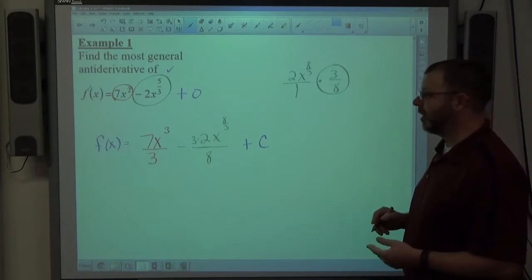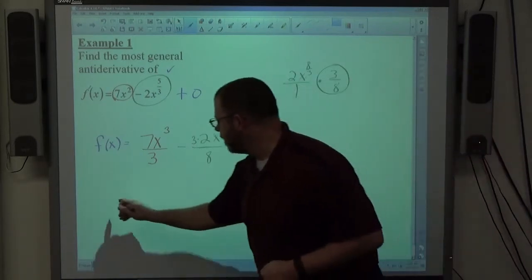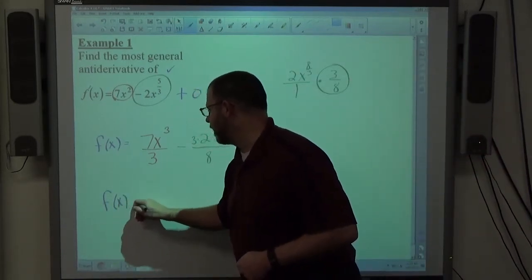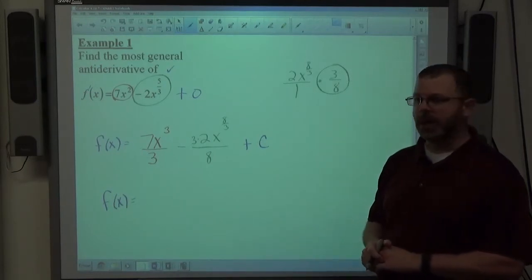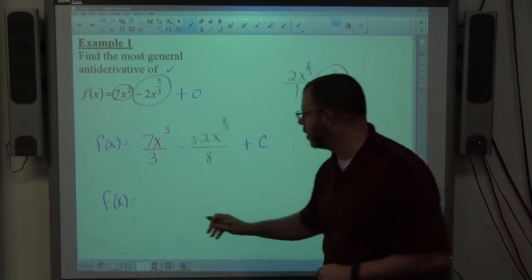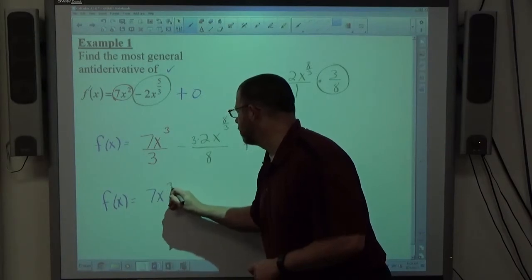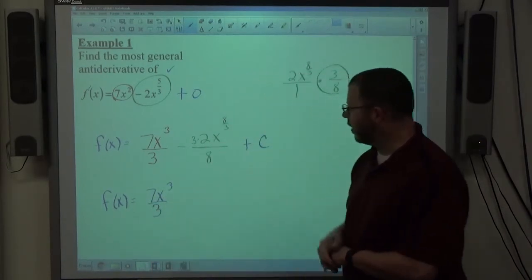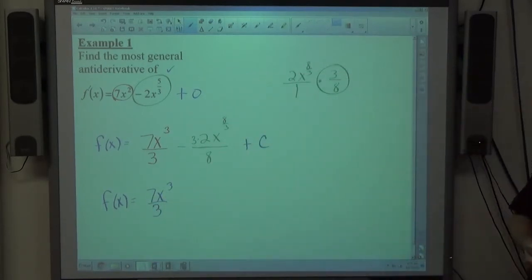The last thing to do is to simplify each term individually. So looking at the red term, is there anything I can do to make 7x cubed over 3 any prettier, reducing a fraction, anything like that? No. So that's perfect, 7x cubed over 3. Can I do anything to make 3 times 2x to the 8 thirds over 8 any prettier? 3 times 2 is 6.